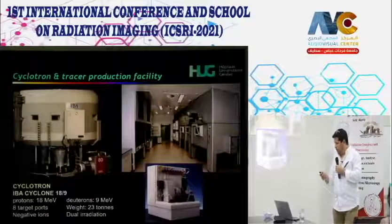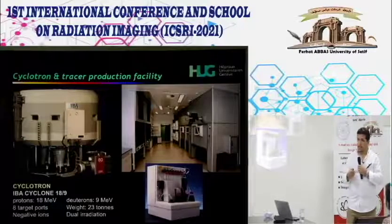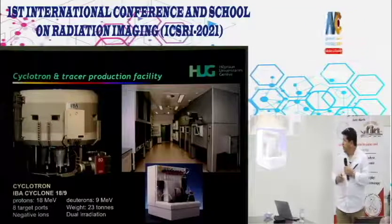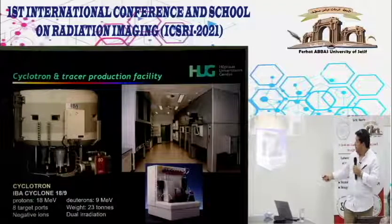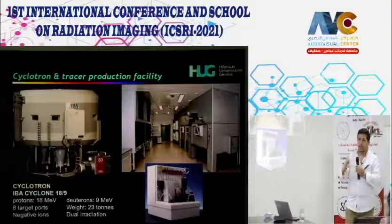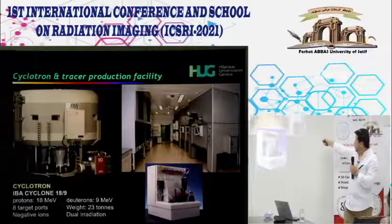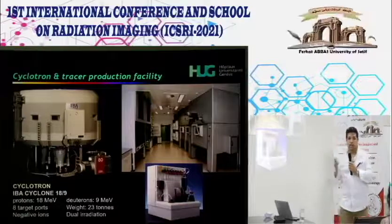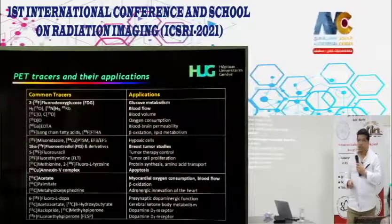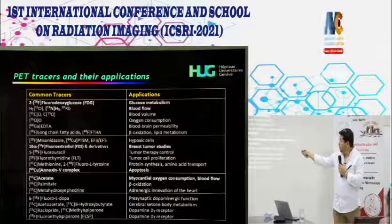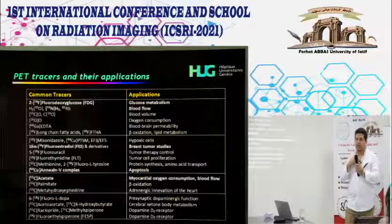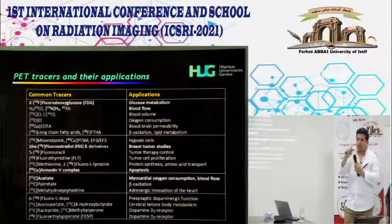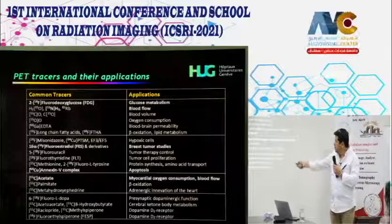Operating a PET facility requires a cyclotron for tracer production, hot cells (shielded robotic systems for handling high radioactivity), and automated synthesis modules. FDG is the most widely used tracer—for neurology, myocardial viability, and oncology, exploiting the higher metabolism of cancer cells versus normal cells. Other tracers target perfusion, hypoxia, and blood flow.